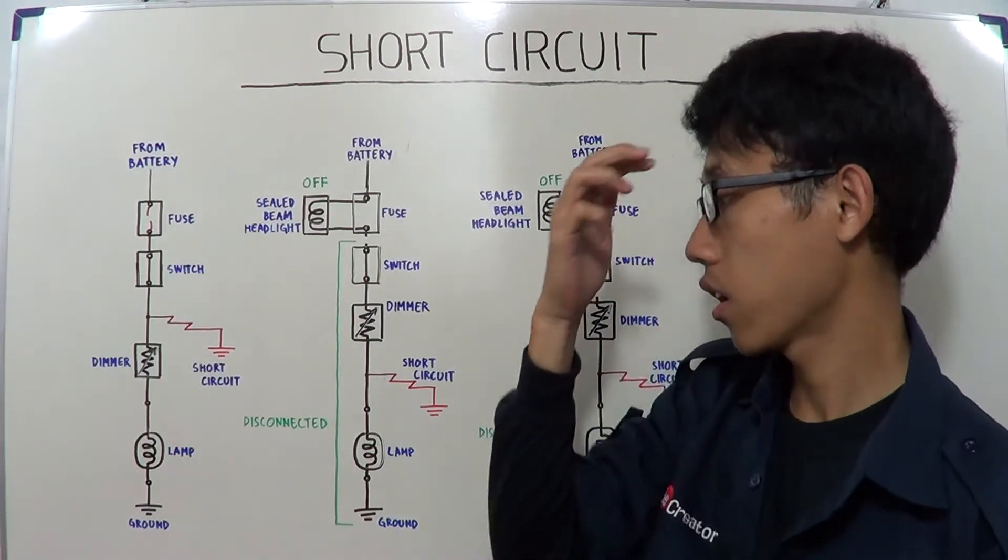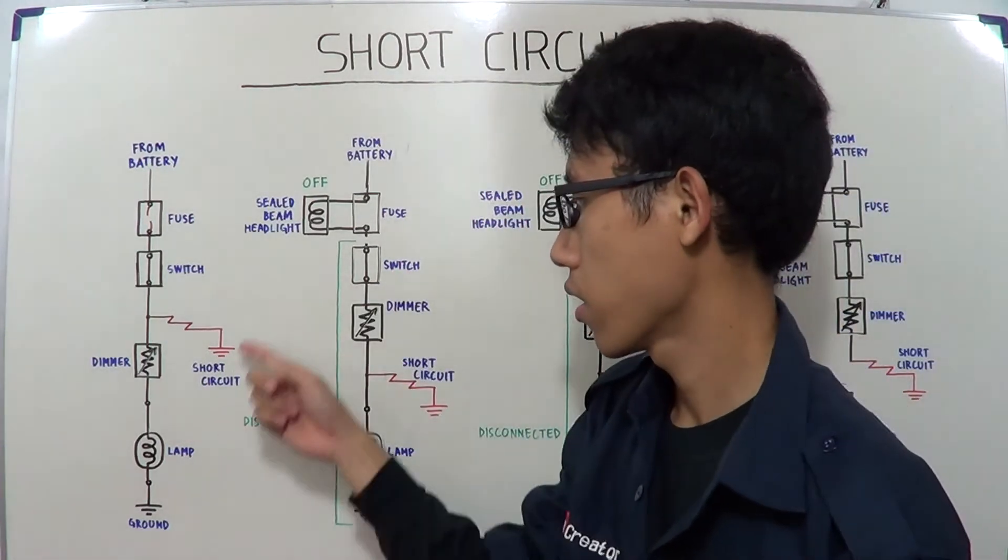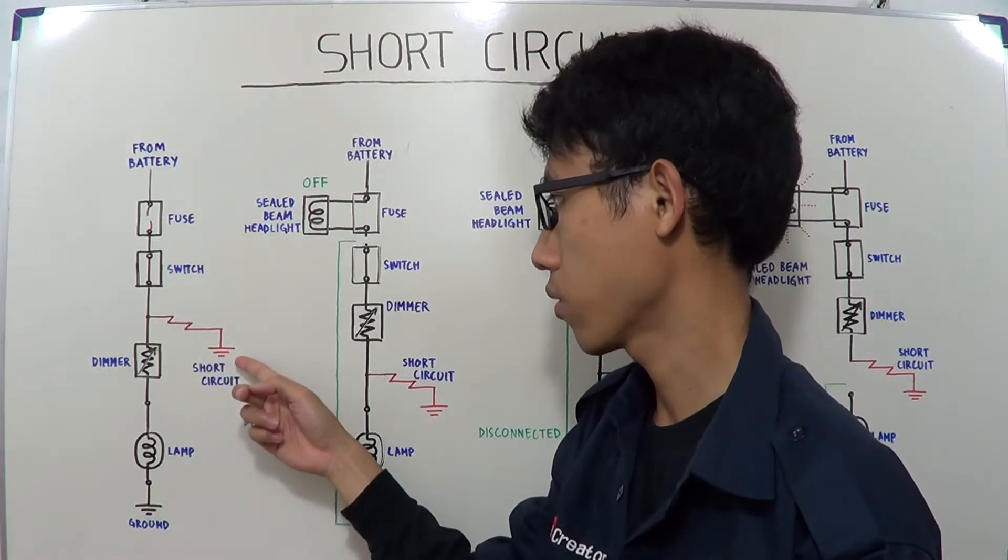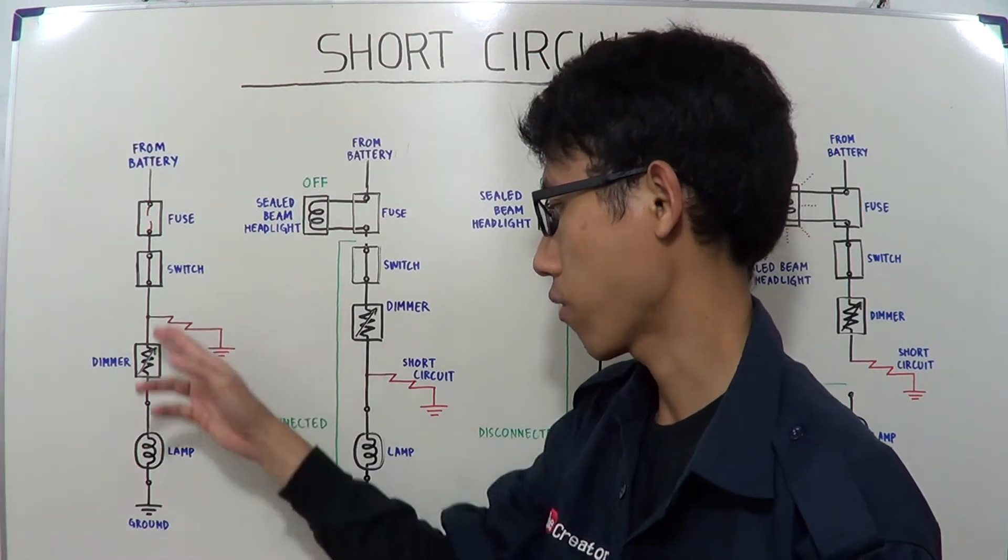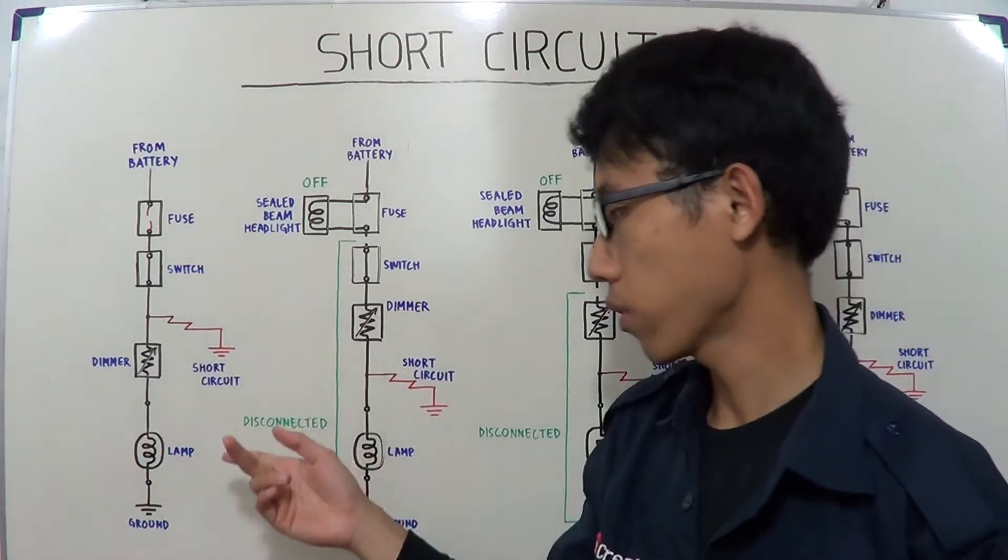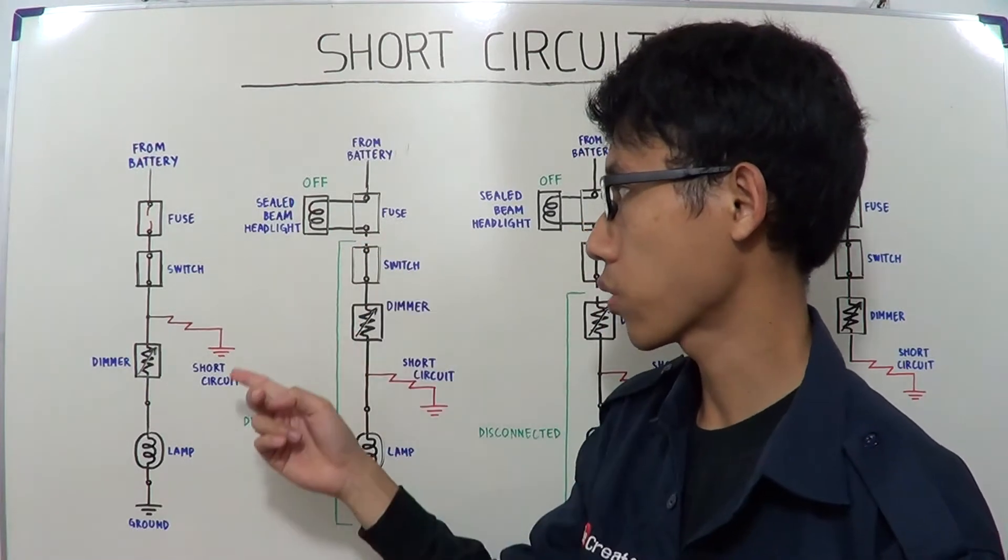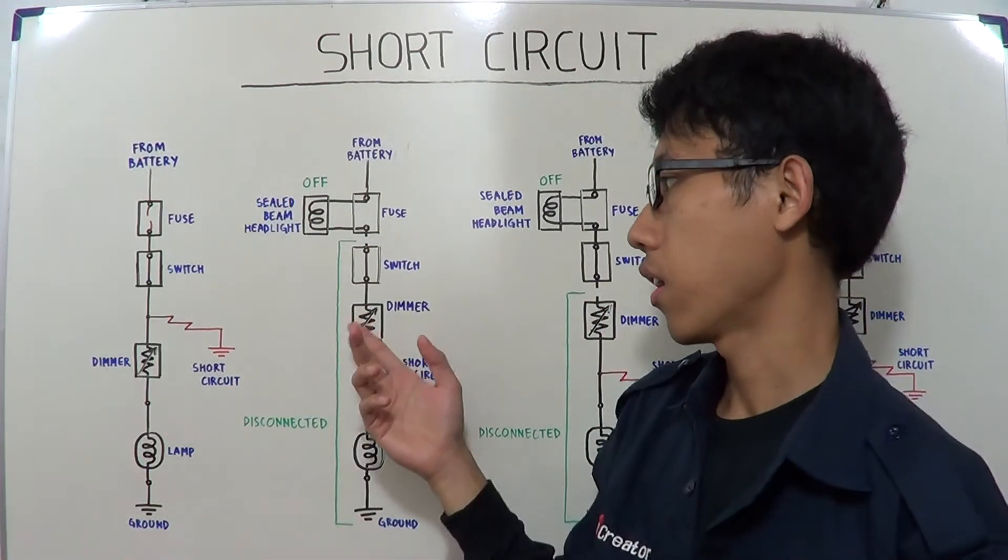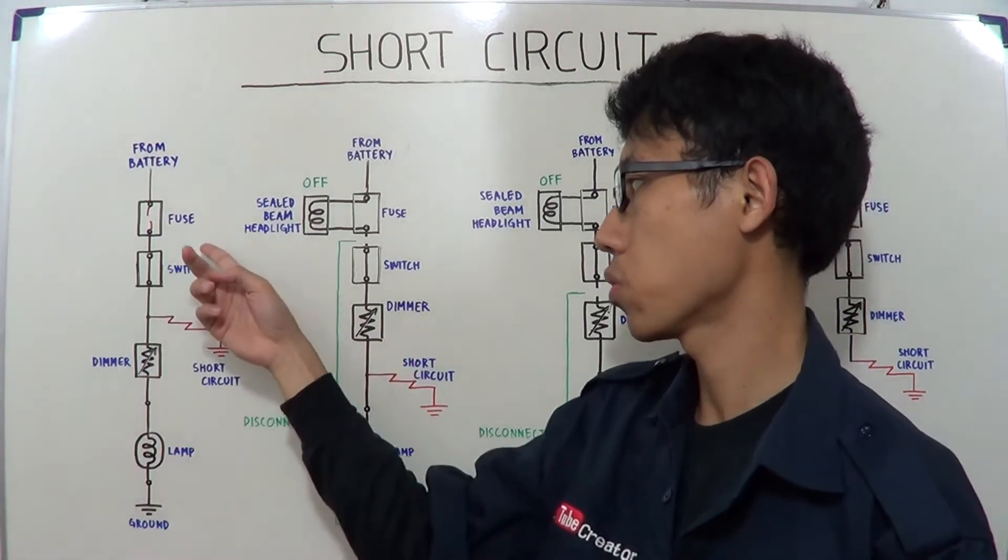And because the electric current goes directly to ground, there is no resistance in this circuit. Consequently, the electric current is excessive and causes the fuse to blow.